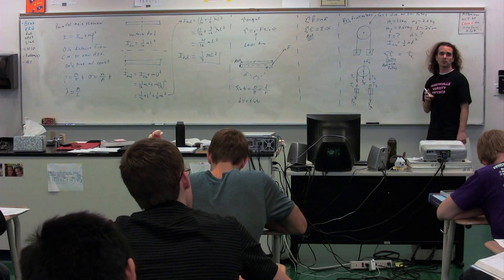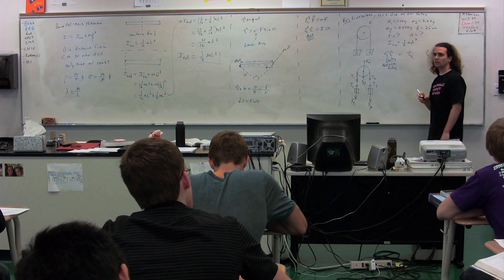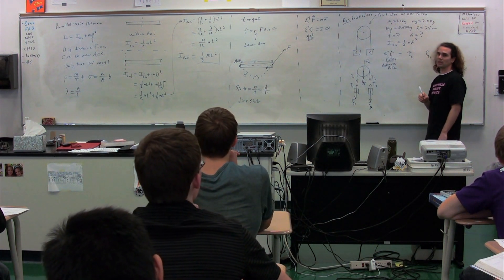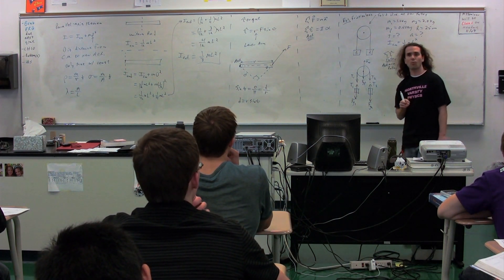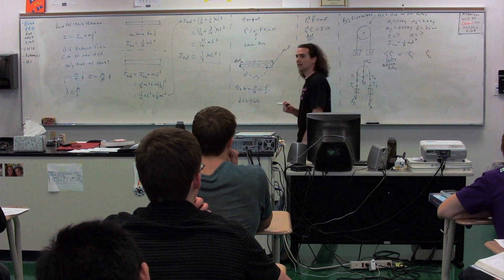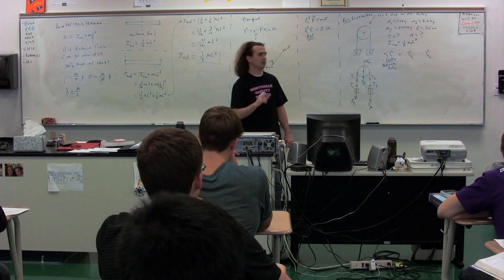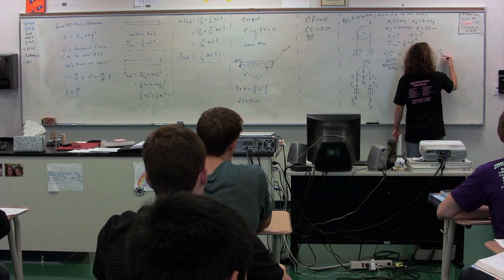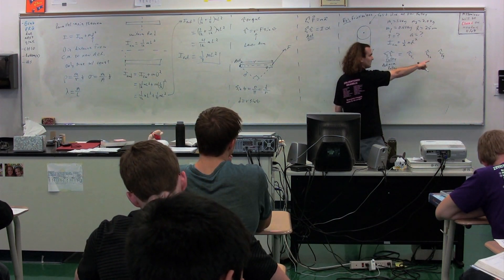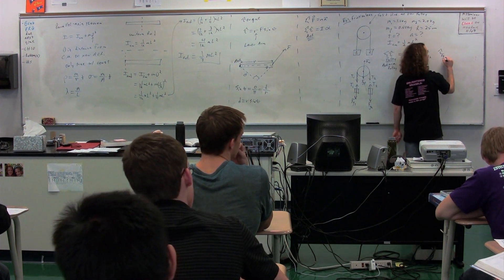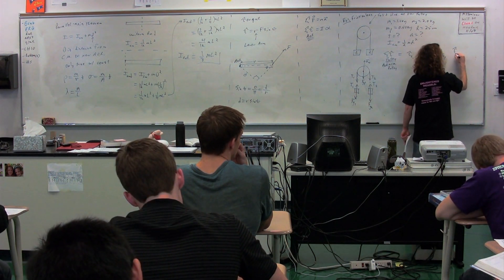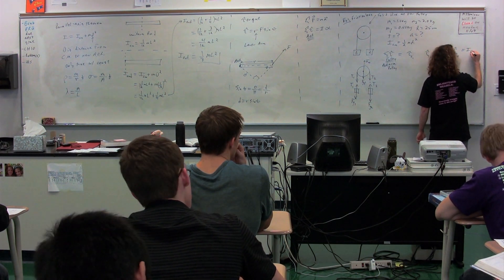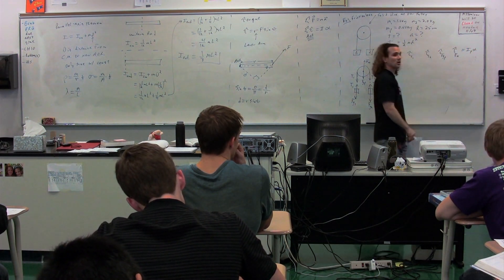So far we have a torque due to tension one and a torque due to tension two. We also need the torque due to the force of gravity on the pulley and the torque due to the force normal. This whole thing equals the moment of inertia of the pulley times the angular acceleration of the pulley. Now we need to decide on positives versus negatives.